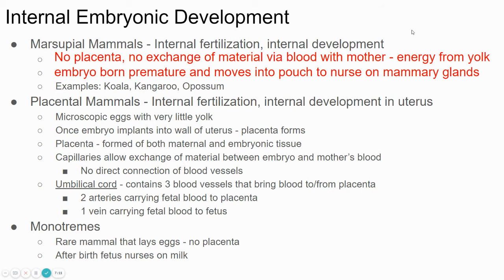Placental mammals, which include most other mammals like us, have a placenta that forms after the embryo implants. It allows the exchange of materials between the mother's blood and the blood of the fetus. The embryo is connected to the placenta by the umbilical cord, which has blood vessels that take the blood out and bring it back. In the placenta, blood from the mother goes through capillaries next to capillaries from the fetus, and oxygen, nutrients, and waste products can be exchanged — but there's not a direct connection.